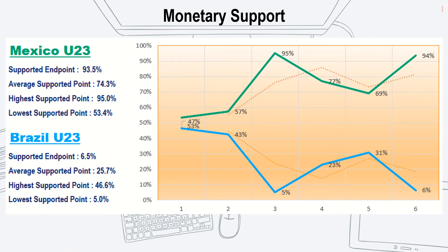The monetary graph shows the difference on the endpoint of monetary support, not missing out important values on average, highest, and lowest — because these values show how much support is taken into consideration. If they possess a higher support value, likewise those holding very low value will further depress the market's support intention in the game.